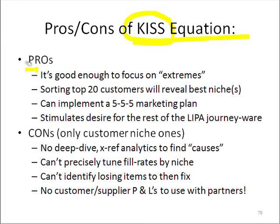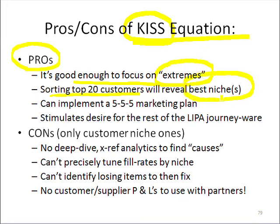The pros of using my simple model is it gets you going. It's good enough to focus on the very extremes of just the customer profitability ranking report. You can even look at the top 20 customers and start to reveal what's our number one best niche — identifying maybe five key accounts that help reveal the service value equation for that niche. So you can start to do a 5-5-5 marketing plan.